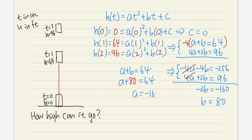When we work in seconds and feet, the leading coefficient a will always be -16 — you'll see why later, it has to do with gravity. And b is actually the initial velocity, but we'll talk about that in detail later. So now we have the equation: h(t) = -16t² + 80t.